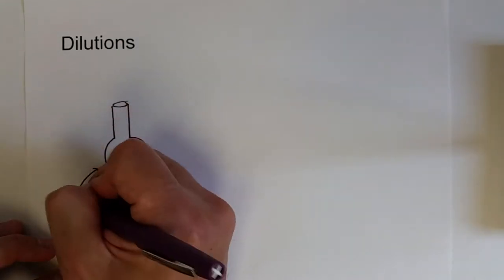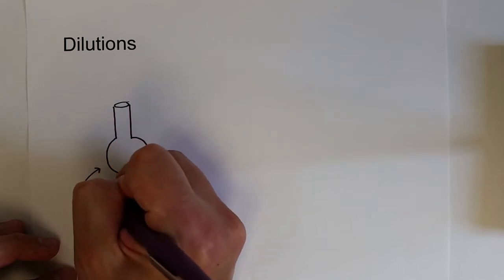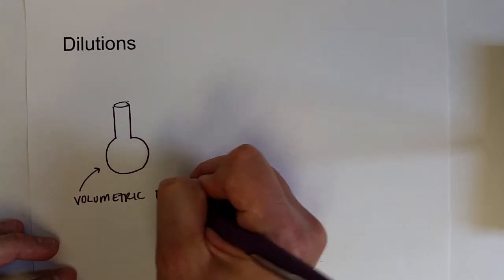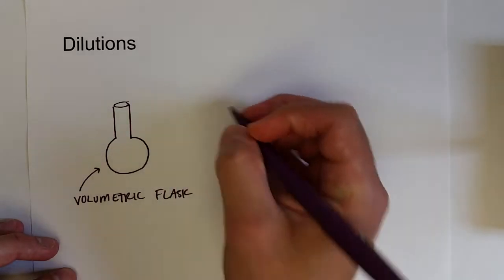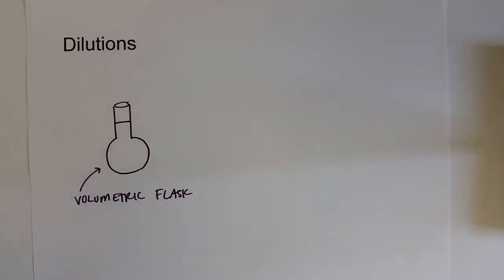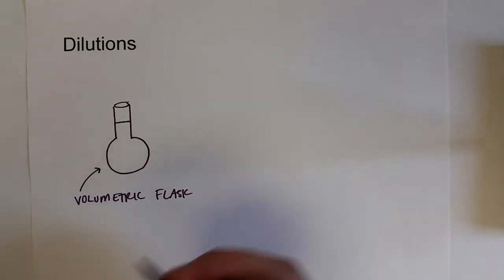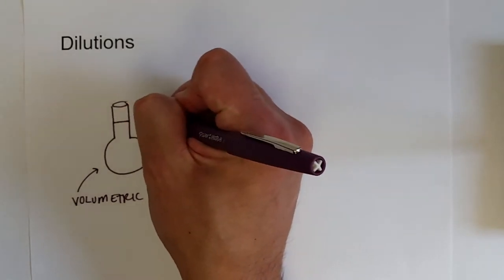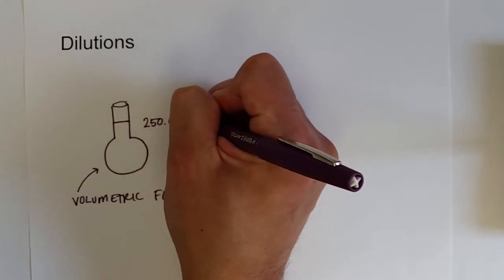Usually what you do is you grab what is known as a volumetric flask and these usually are only calibrated to hold one volume of solution and so they only have one line on them. Say this is a 250 milliliter flask.